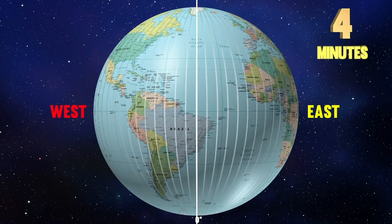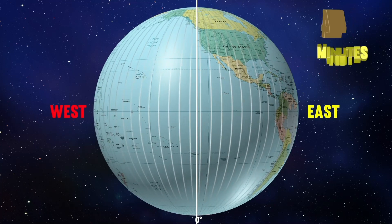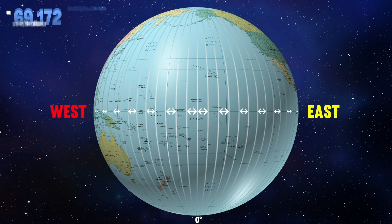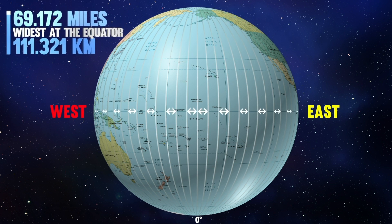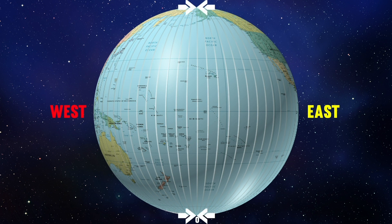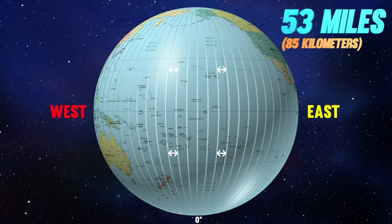It takes four minutes for the earth to rotate one degree of longitude. The distance between degrees of longitude varies greatly depending on location on the earth. Longitude is widest at the equator, with a distance of 69.172 miles (111.321 kilometers). The distance gradually shrinks to zero as they meet at the poles.